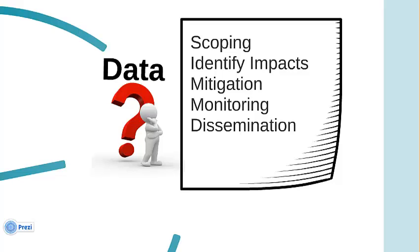As you may already know, the HIA tool includes five steps: Scoping, Identify Impacts, Mitigation, Monitoring, and Dissemination. But before we dive into these steps, you might be wondering where you can collect the necessary information and data needed to complete the HIA.